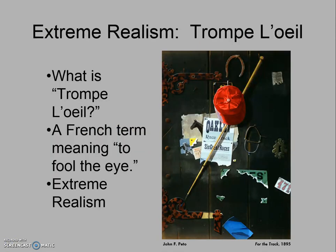Another tool that artists use to make their still lifes interesting is extreme realism. There's a term for this known as trompe l'oeil — a French term that means to fool the eye, typically associated with extreme realism. When you are looking at still lifes that have this feeling that you could pick up the objects right off the canvas or off the paper, the artist is using extreme realism, specifically trompe l'oeil, fooling your eye to make you believe something is there that really isn't. This artist also used a strong diagonal in their compositional arrangement.